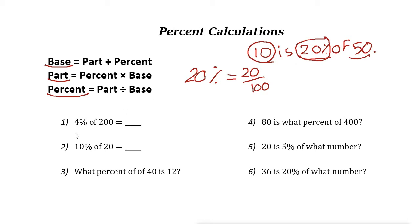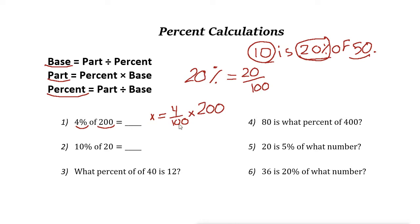Number one says 4% of 200. Here 200 is the base and 4% is the percent section, so the part is missing. We let X be the part. The formula is: part equals percent times base. We convert 4% to the fraction 4 over 100, then multiply by 200.